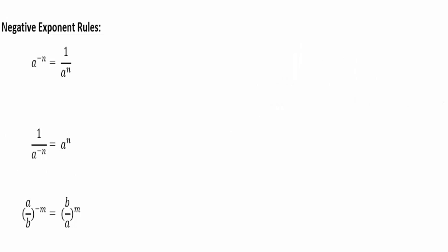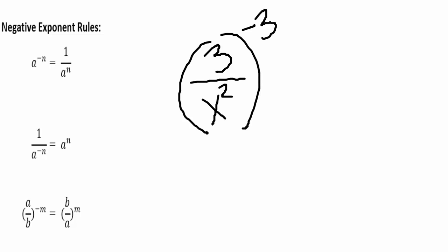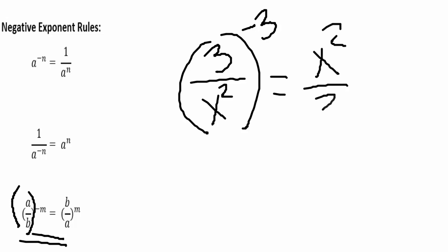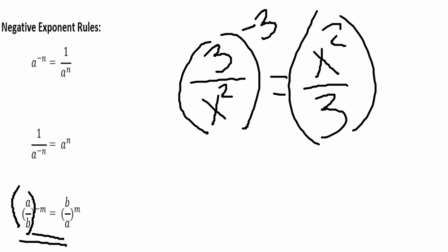What if we had 3 over x squared, and this is all being raised to the negative third power? This is our third variation. If we have a fraction raised to a negative power — like a over b raised to a negative power — the rule tells us to flip the fraction. Instead of a over b, we now have b over a. So that would look like x squared over 3. And not only do we flip the fraction, but this negative exponent is now going to be positive. So the negative 3 is now going to be a positive 3.